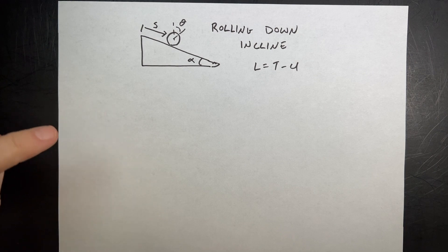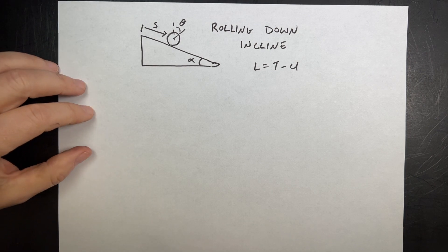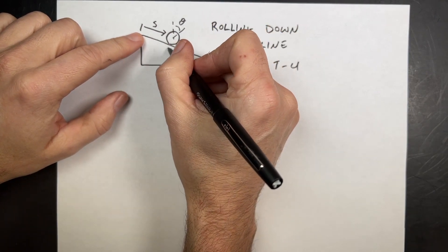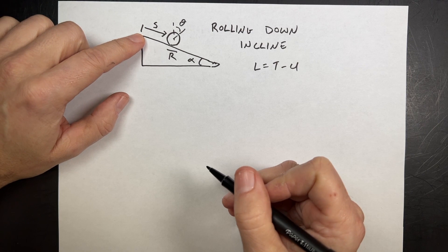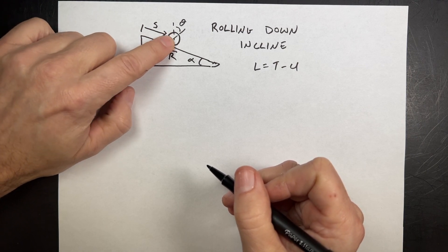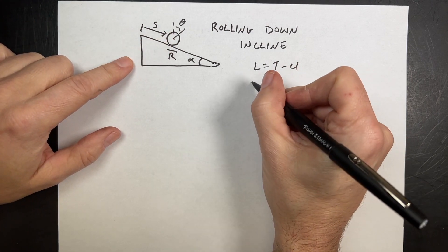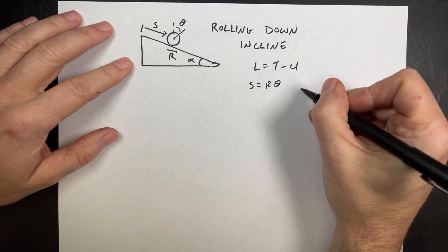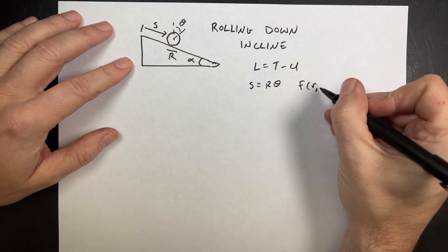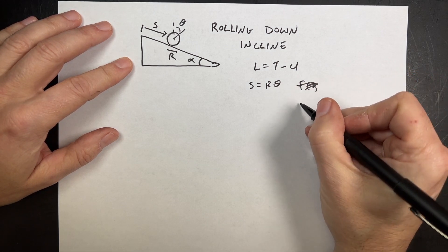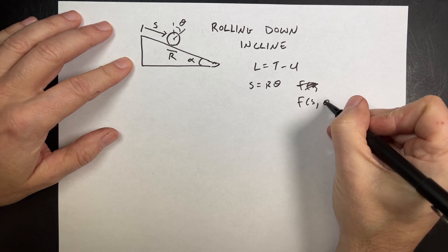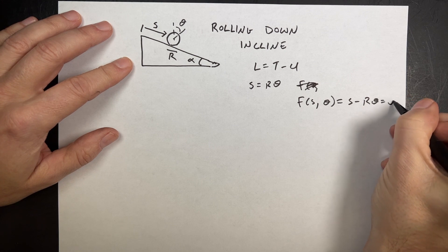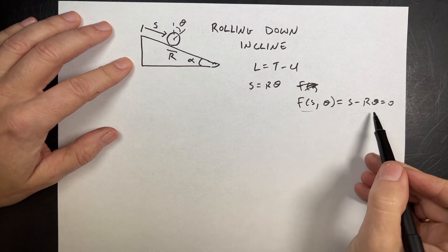With that, I need to first write down the equation of constraint. How is this thing constrained? If it is rolling and has a radius R, then rolling without slipping means S equals R·theta. That has to be true. So we can write this as a function F of S and theta equal to S minus R·theta equals zero. You always want this in terms of some function equal to zero.